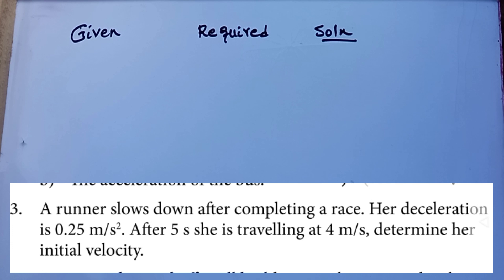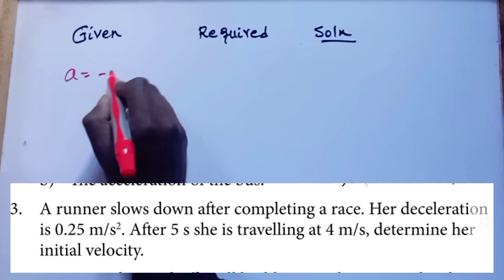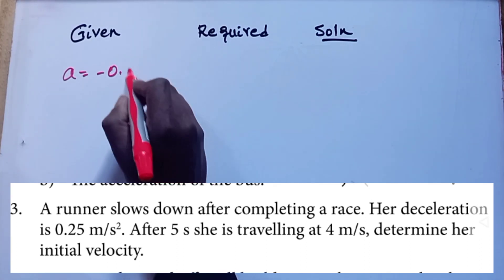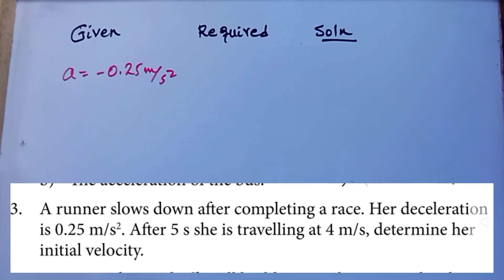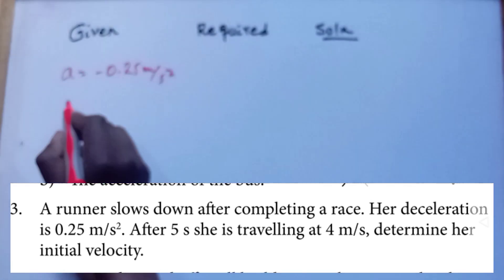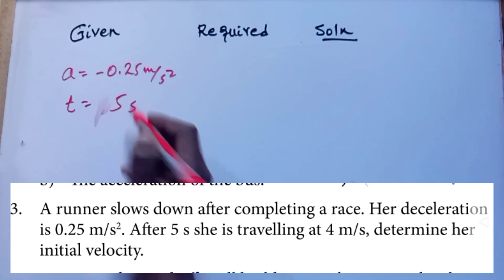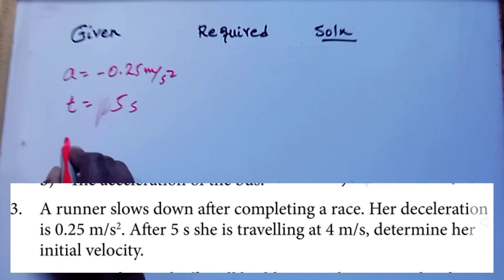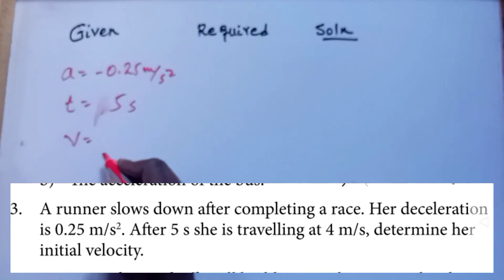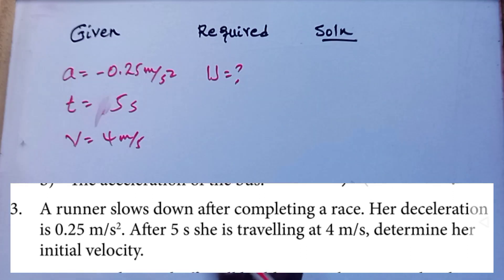Given data: acceleration = negative 0.25 m/s² (negative because it is deceleration), time = 5 seconds, final velocity = 4 m/s. Required: find the initial velocity.